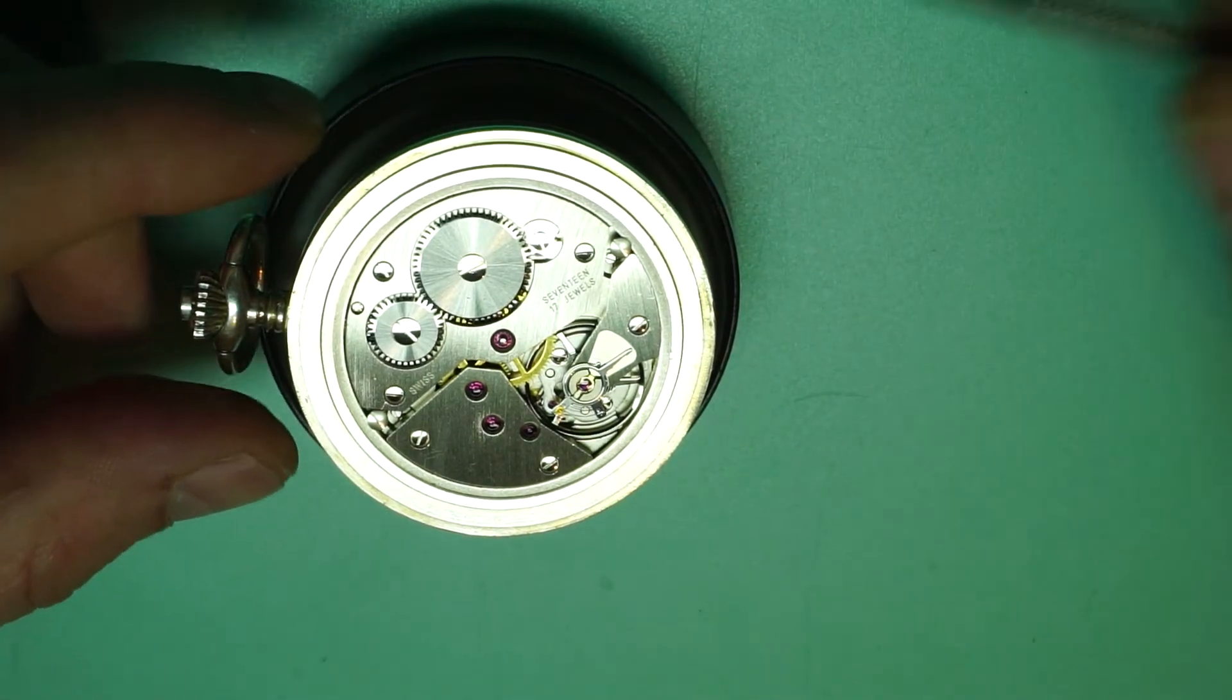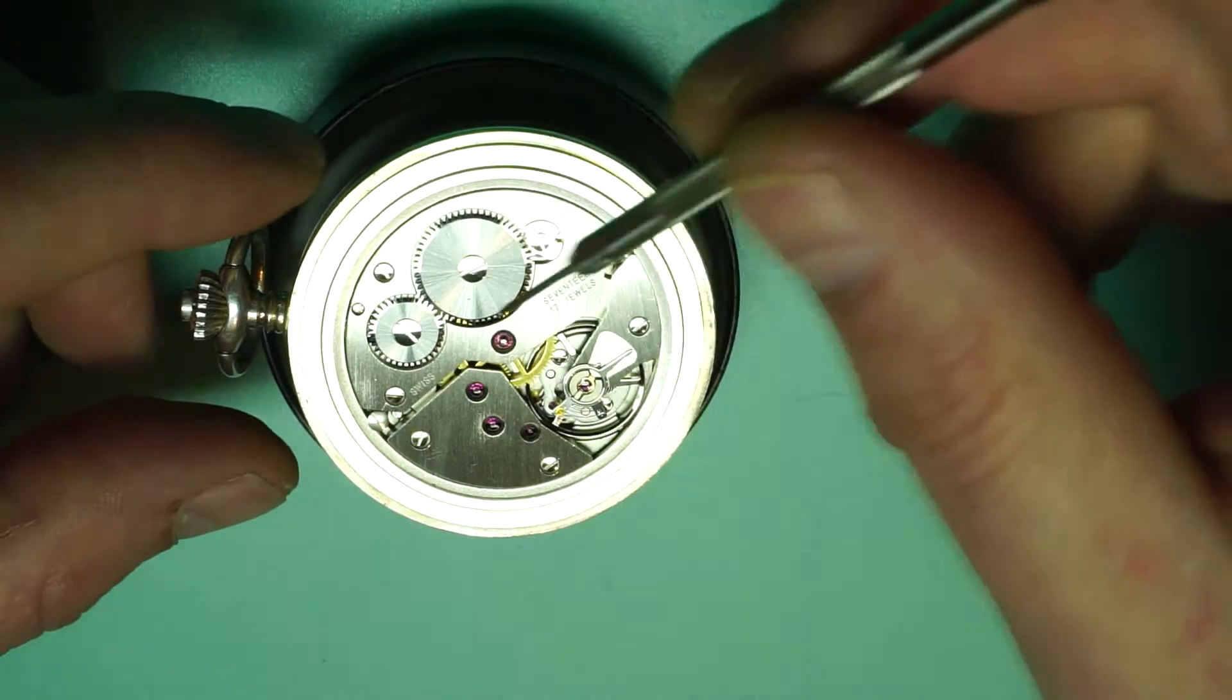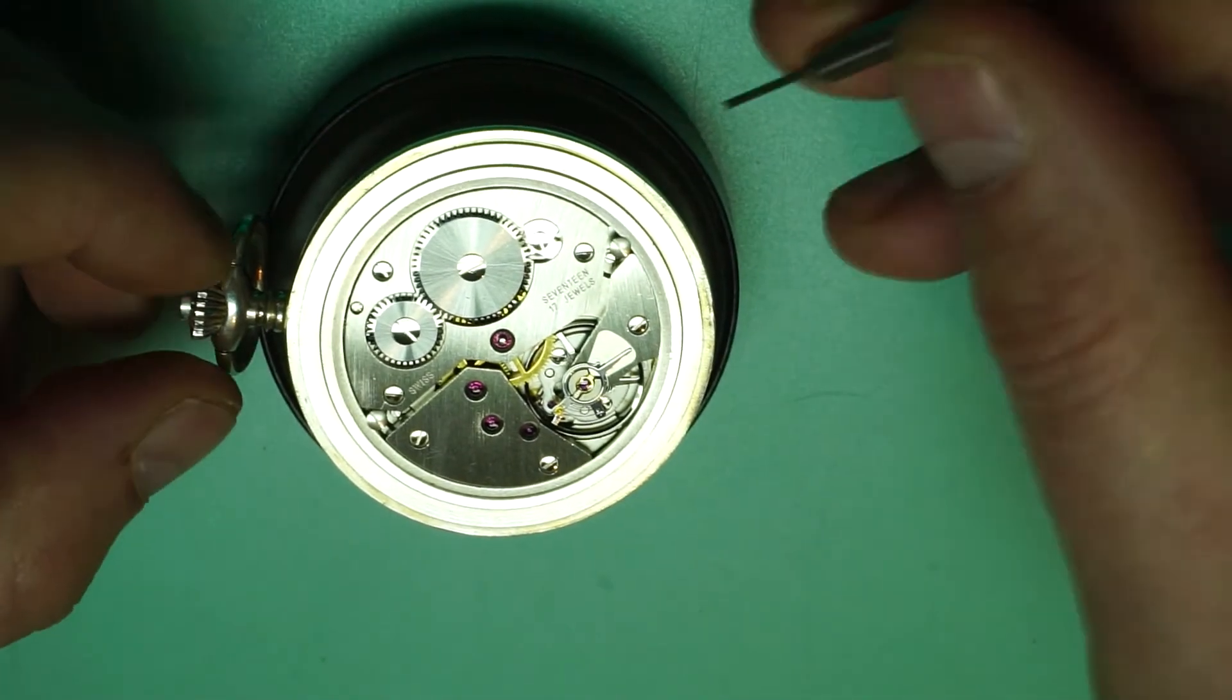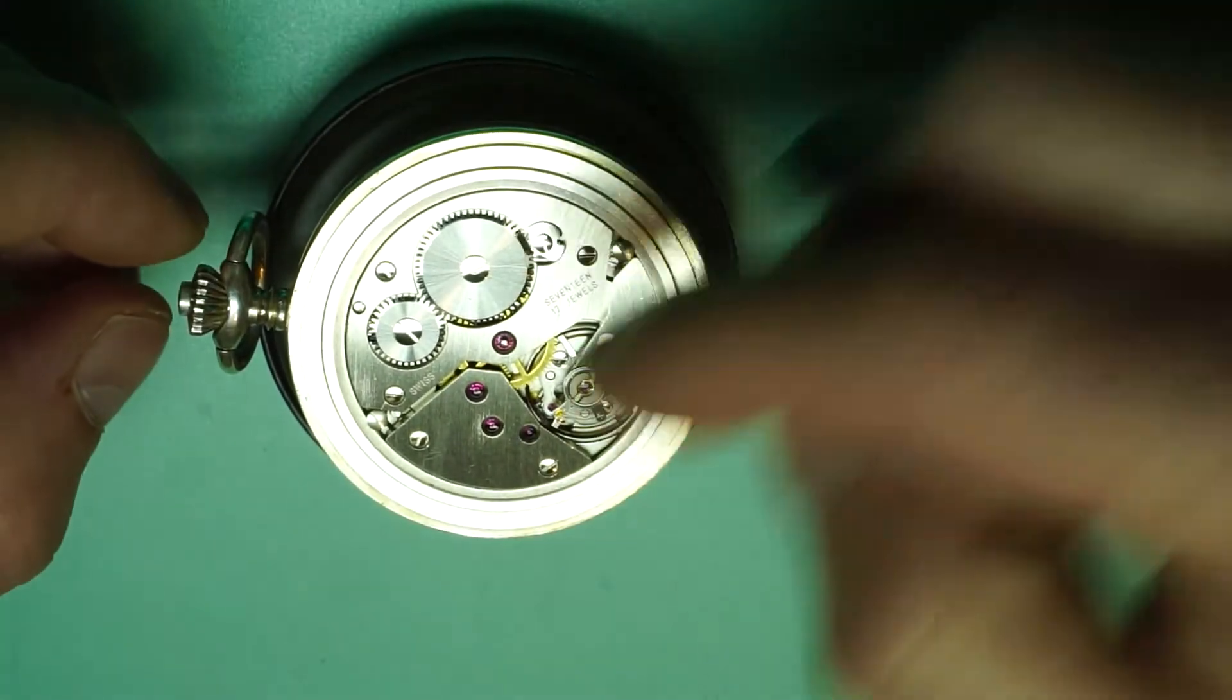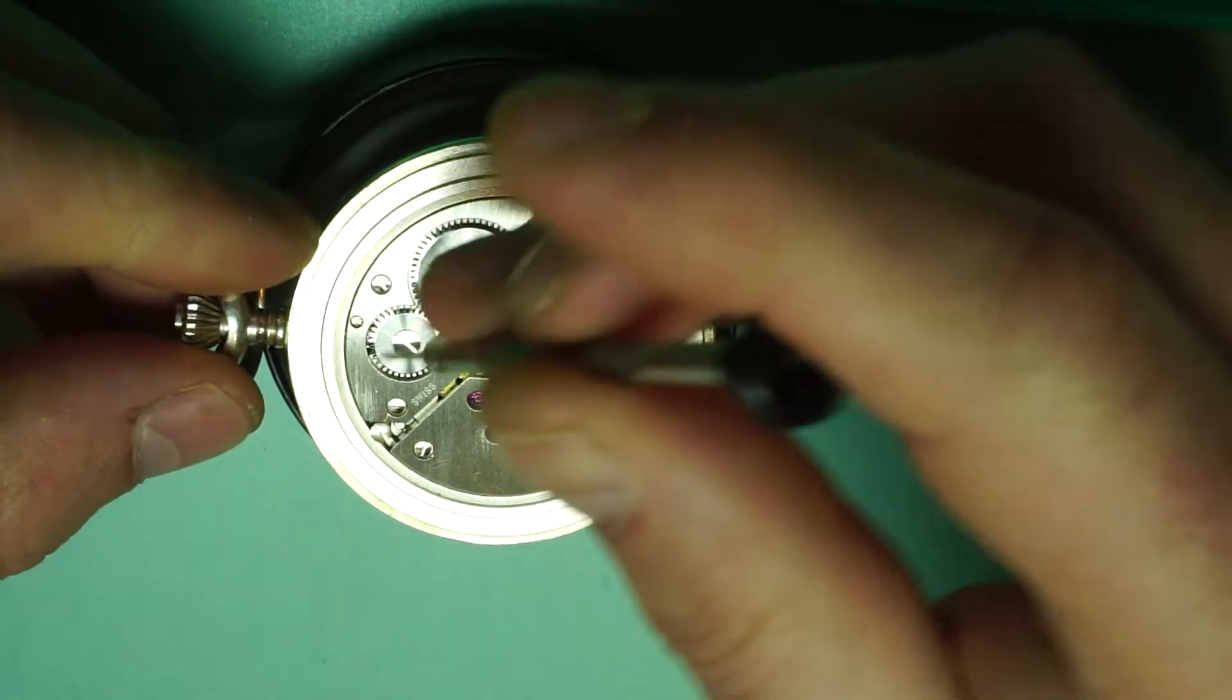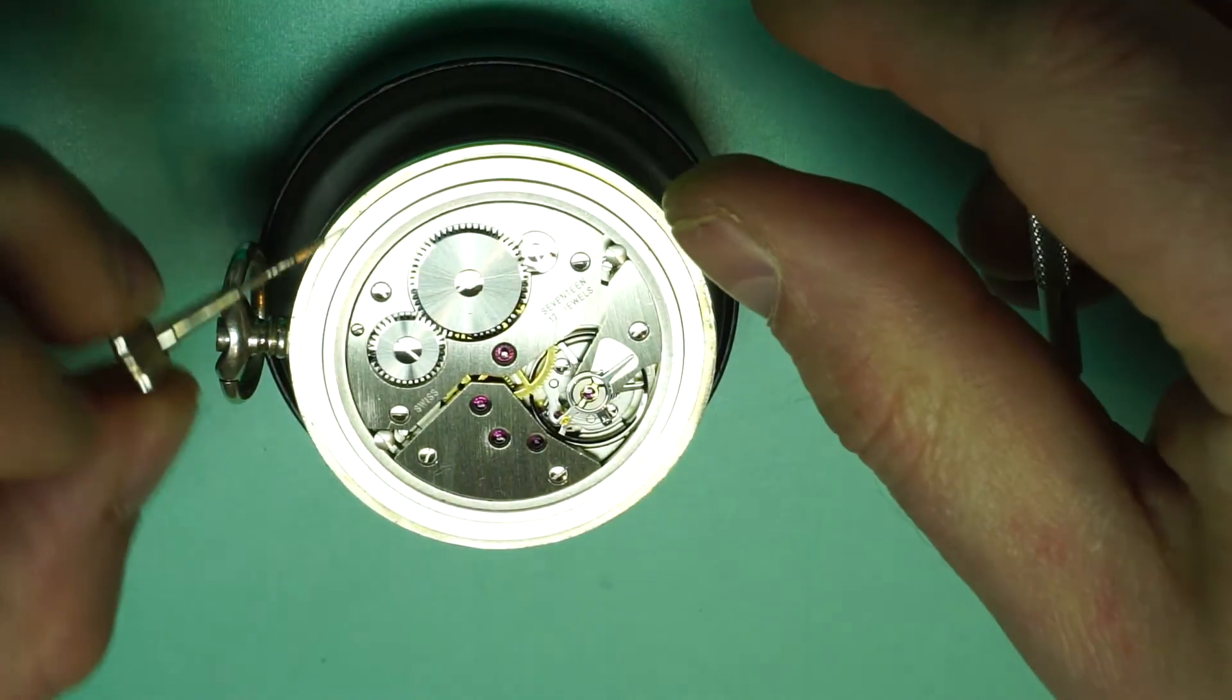Now the important thing to notice about the setting bolts is that you don't want to unscrew it entirely because if you do that then the setting lever will fall out on the other side. So we only want to give it a couple of turns until the stem wants to come out. Now this particular movement I like to pull the stem out to the time-setting position. We give it about a turn and a quarter and that's usually enough to get the stem out.